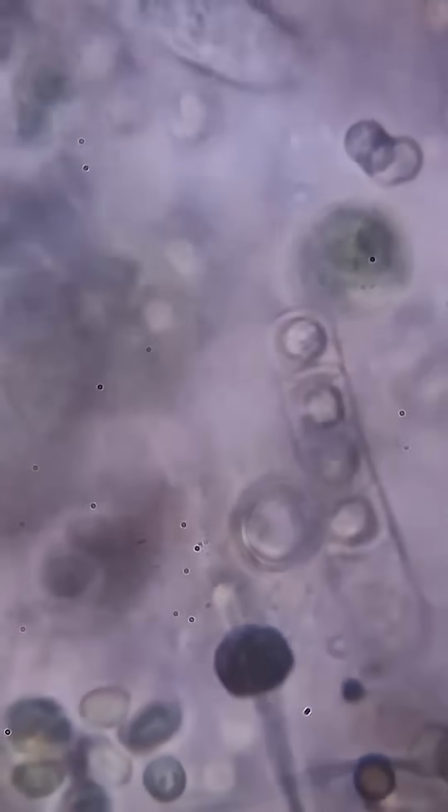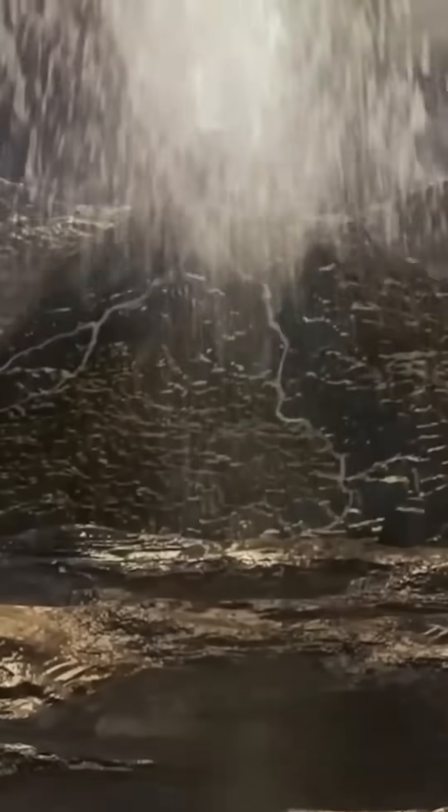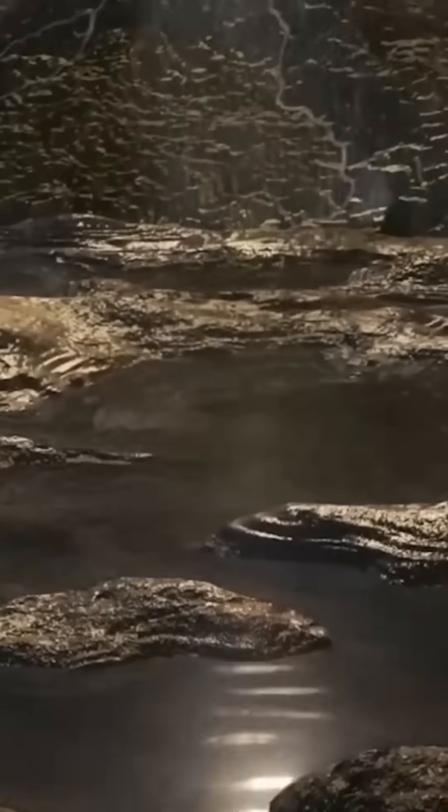And it likely lived in extreme environments, underwater, surrounded by hot, mineral-rich fluids near hydrothermal vents. Conditions most life today would find uninhabitable. In LUCA's world, waste from one organism was food for another, an early example of a self-sustaining ecosystem.